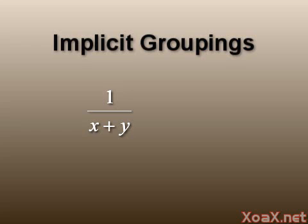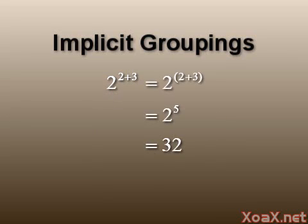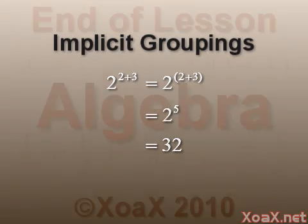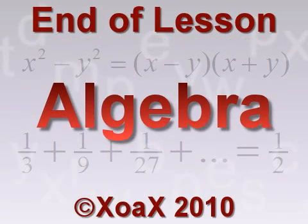A few other remarks about notation are in order. We will often see expressions like this, 1 over x plus y. In this case, the fraction represents the inverse of x plus y. Even though no parentheses are shown, the grouping is implicit. Likewise, we might see 2 to the 2 plus 3, where it is implied that 2 and 3 are grouped as an exponent. So this is equal to 2 to the 5, or 32. This concludes the lesson.